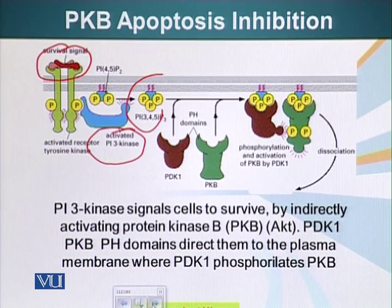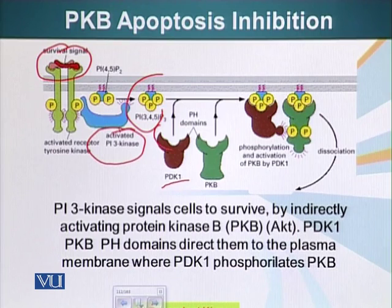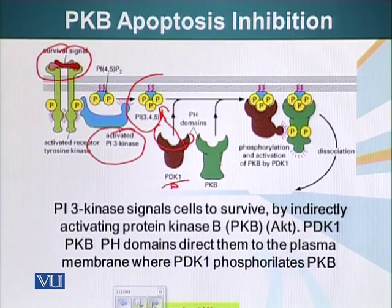In other cells — unlike B cells that make antibody — there is a protein called PDK1, which abbreviates for phosphatidylinositol phosphate-dependent kinase 1. This molecule has a pleckstrin homology domain which allows it to bind PIP3 and become activated. Remember, this is a kinase — K stands for kinase — so it can add phosphate groups to its substrate molecules.